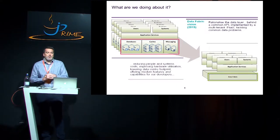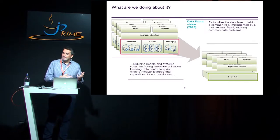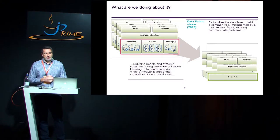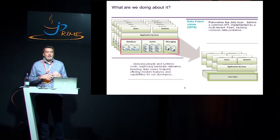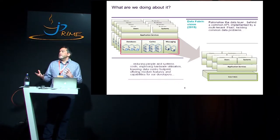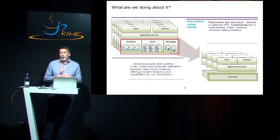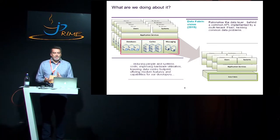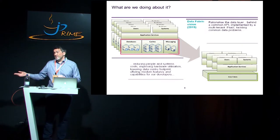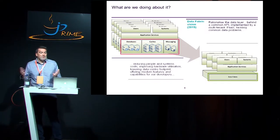So what are we doing about it? Well, that's part of what Data Fabric is about. We're really trying to move from these very siloed, very duplicated technology stacks to rationalize the data layer underneath these applications. The idea is that we provide a common API for these systems to use, and we tackle it with a multi-tenant platform as a service that addresses most of the common data problems. Along the way we're reducing people costs and systems costs, getting better data center utilization, smaller footprint, and raising the level of abstraction at which development teams work.